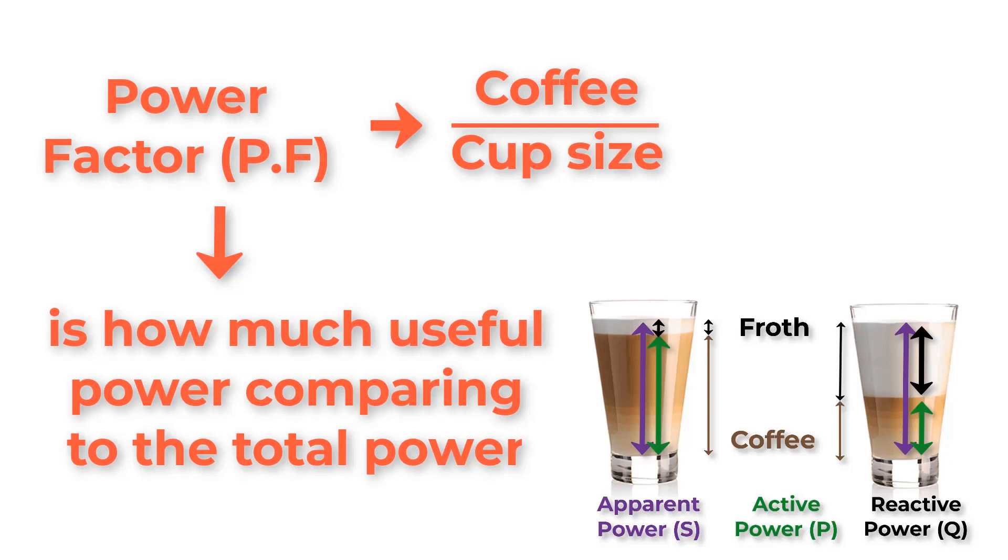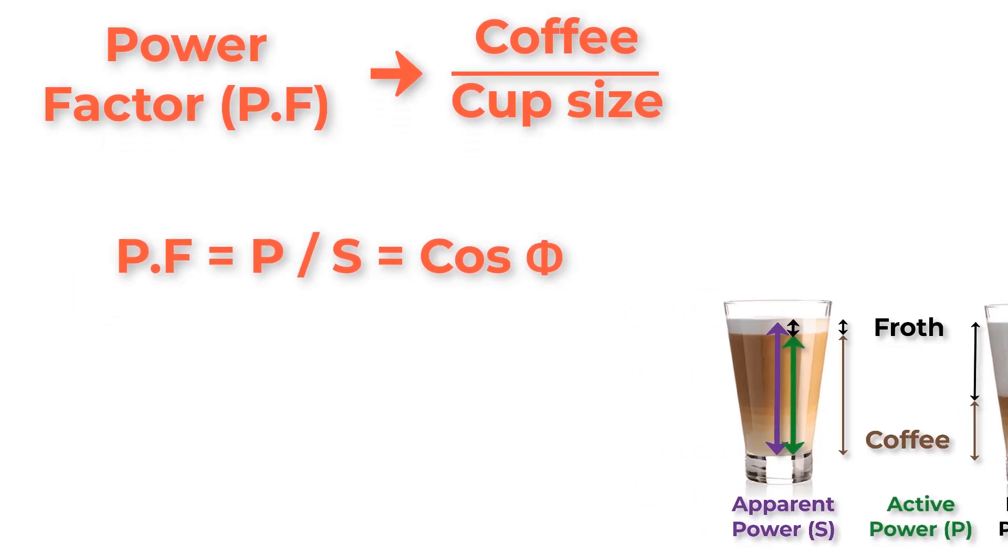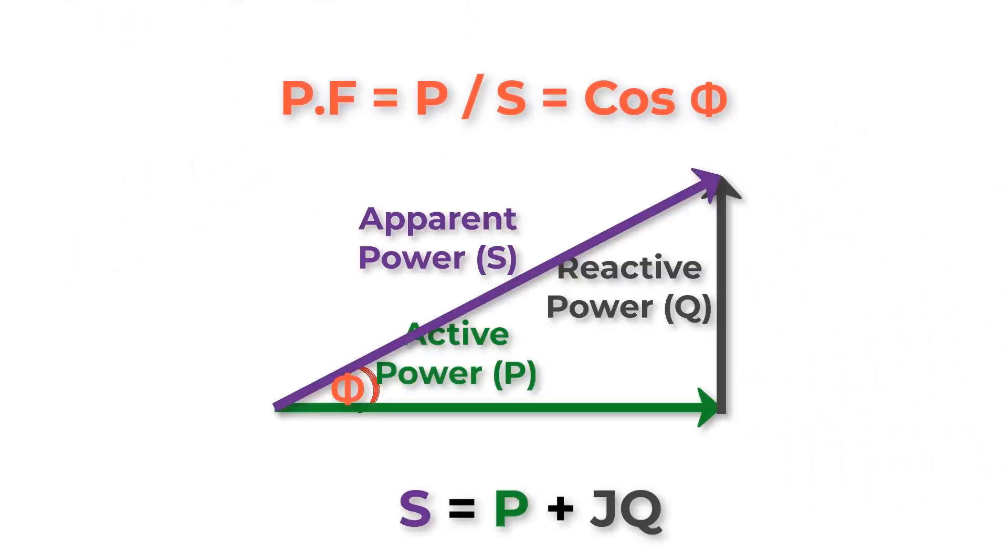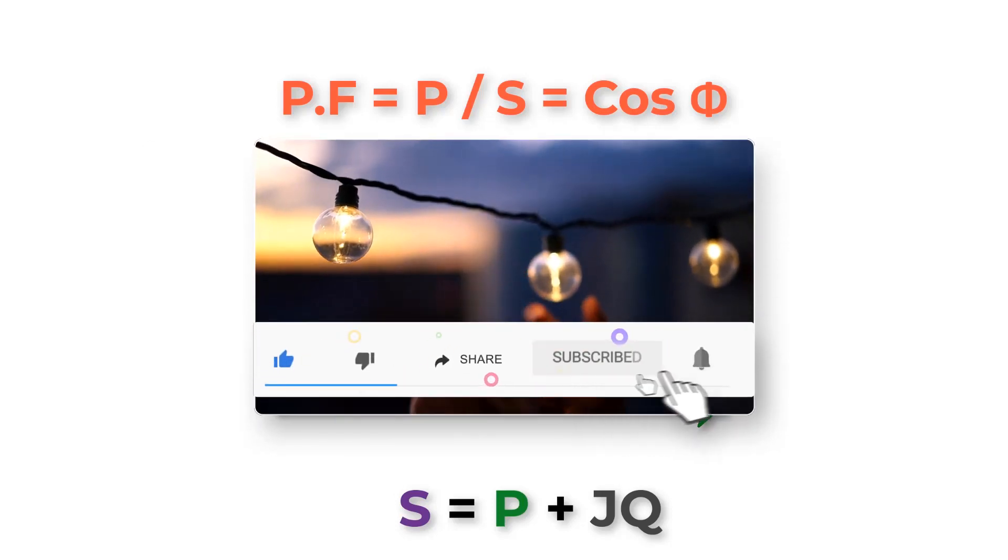So power factor is P over S or cosine phi. As the angle phi decreases, cosine phi or power factor will increase, or P will be much closer to the value of S. Hopefully this video has helped you to understand the meaning of each terminology.